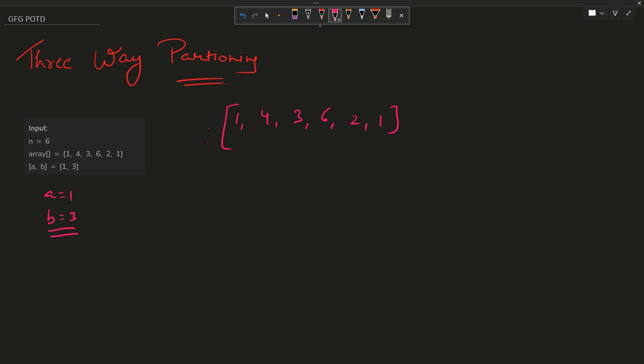The problem says we have to make this array look something like: all the elements less than a appear here, all the elements greater than b appear here, and all the elements in this range should appear in between. You have to partition this array into such a format.